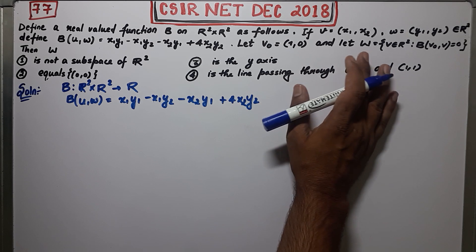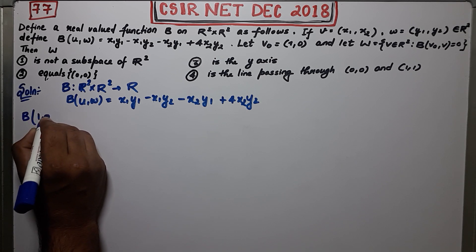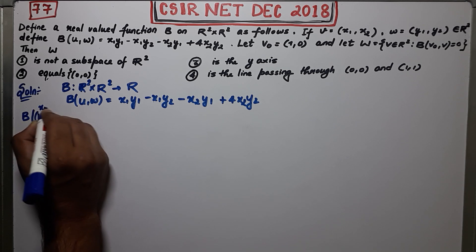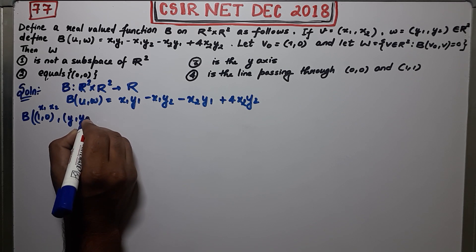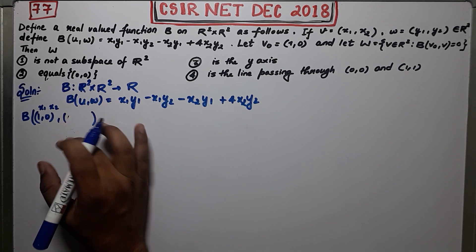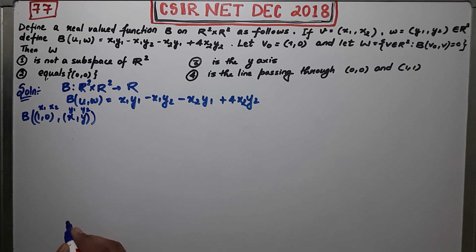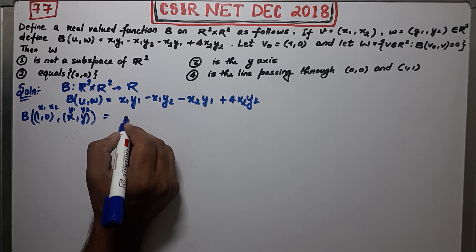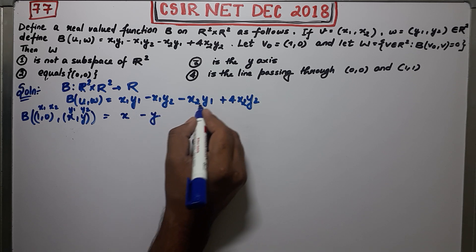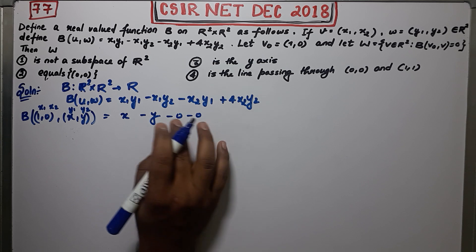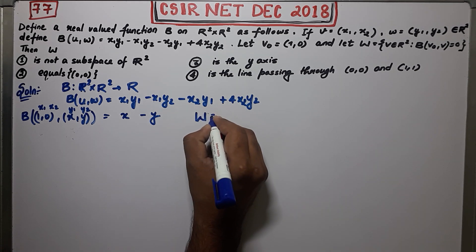Now they are fixing v₀ = (1,0) and defining W. I will calculate b(v₀, v). Consider v₀ = (1,0) as (x₁, x₂) and take v as a general point (x, y) from R², which acts as (y₁, y₂). From the definition of b, substituting gives b(1, 0; x, y) = x·1 + y·0 − ... = (x, y). So b of (1,0) comma v equals x minus y.